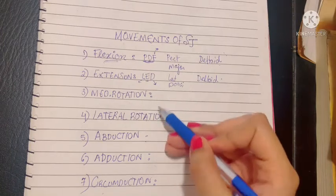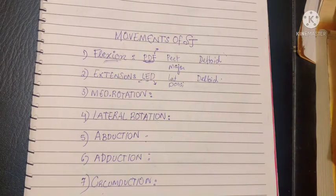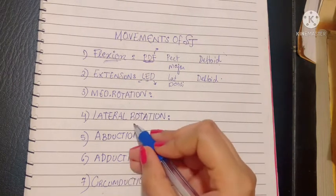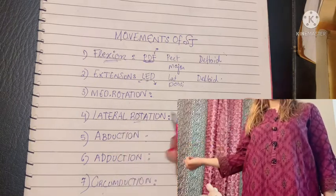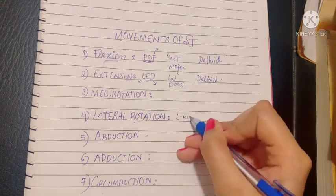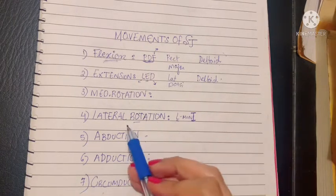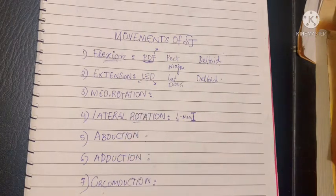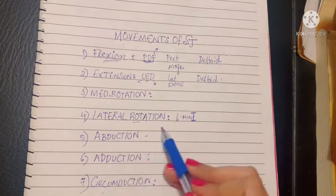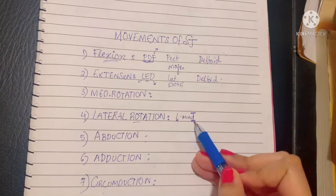Moving on, let's talk about the medial and lateral rotation of the shoulder joint. Let's discuss lateral rotation first. Lateral rotation is performed by L-mini muscles. It's very important to remember the medial and lateral rotators of the shoulder joint.